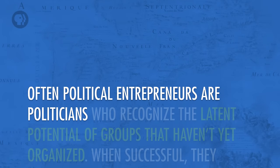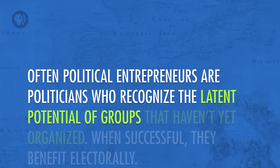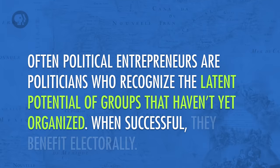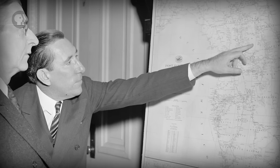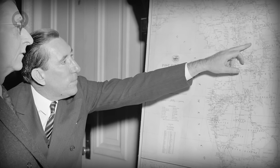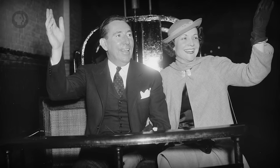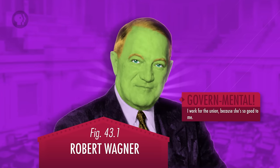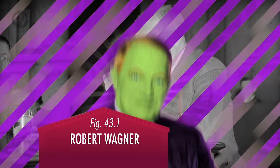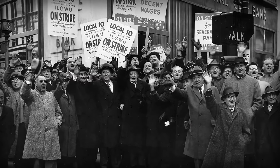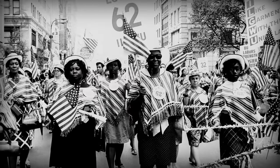Another way that interest groups can be formed is by political entrepreneurs. These are specific individuals who make extraordinary efforts to bring people together for the purpose of changing policy. Often political entrepreneurs are politicians who recognize the latent potential of groups that haven't yet organized. One of the most famous examples in American politics was Claude Pepper, who realized there were a lot of older Americans in Florida, and that if he became their champion and organized them, they would vote for him. Robert Wagner's sponsorship of the National Labor Relations Act was so important that it's often still called the Wagner Act, helping to create political power for labor unions.